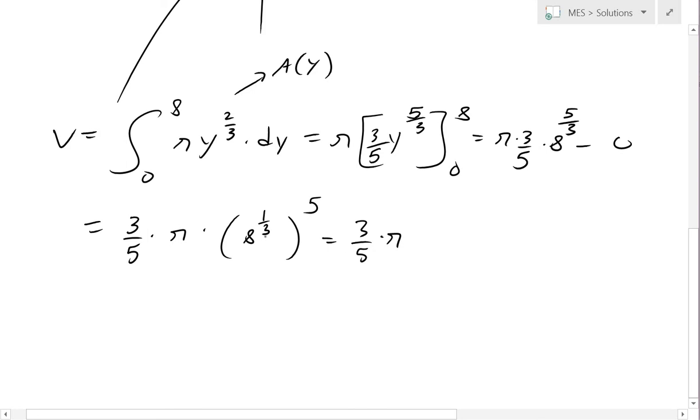This equals 2. The 1 over 3 of 8 is 2, because 2 times 2 times 2 equals 8, so that's the answer in between, so 2 to the 5. Now 2 times 2 times 2 times 2 up to 5, that's just 32.